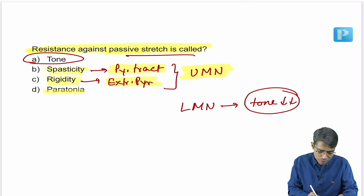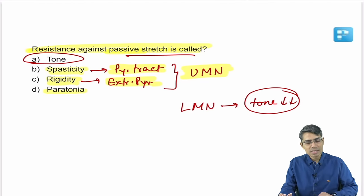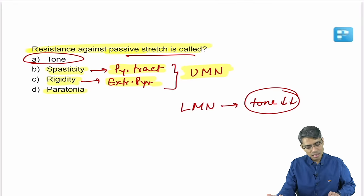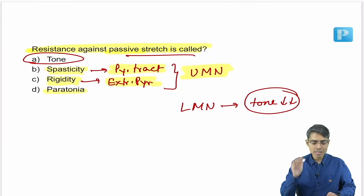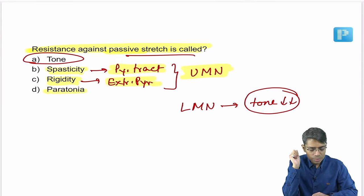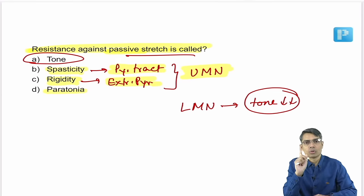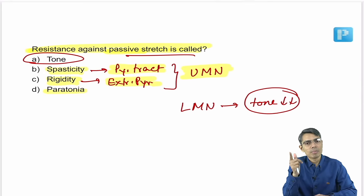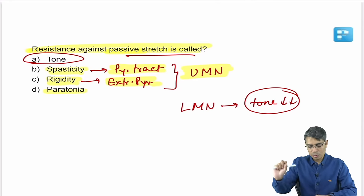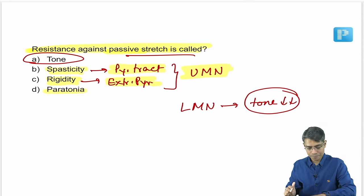Paratonia is variable increased resistance during movement. To summarize: resistance against passive stretch = muscle tone. Tone increases in upper motor neuron lesion; tone decreases in lower motor neuron lesion.